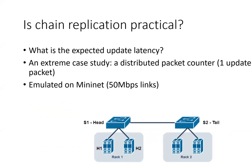The next question is whether this approach is practical. Our evaluation goal is to answer: what is the expected update latency of the write request? To do that, we write a simple distributed packet counter application that uses chain replication to share state, sending a write request on every packet. We set up an emulated environment using Mininet — since it's an emulator and not a simulator, we are only able to emulate 50 megabits per second links and a limited number of switches. We send packets from H1 to H2 and measure the maximum difference between the local counter and the global counter, which we call staleness. This difference is essentially the delay in packets of the write request from when it is generated to when it is acknowledged by the chain.